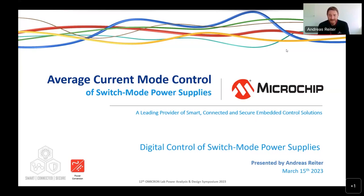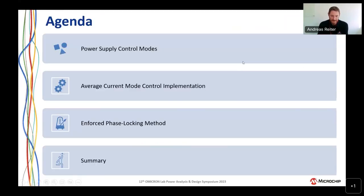The reason this is such a big deal in digital is that it solves a couple of problems, as we will see later on. It is something well-suited for the digital control domain, while it's very hard to do in analog. We thought it would be a good idea to go over some basic concepts and discuss various implementations of average current mode control for specific applications.